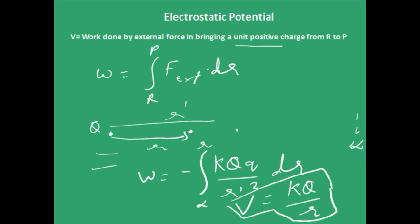Just note that this is very much similar to the electric field at a point which is at a distance r from the point charge — just the denominator is different. In the electric field you get r squared; here you have r, and everything else is the same. That's it for today. In the next video I will tell you how to calculate the electric potential or potential energy when you have a system of charges, electric dipoles, and some stuff like that. Keep watching.